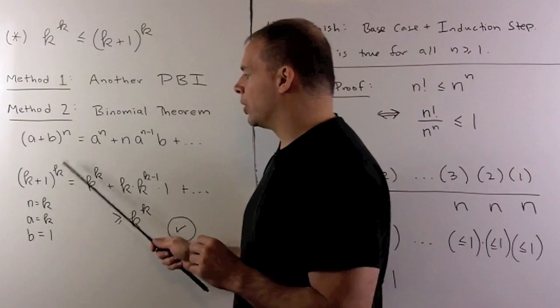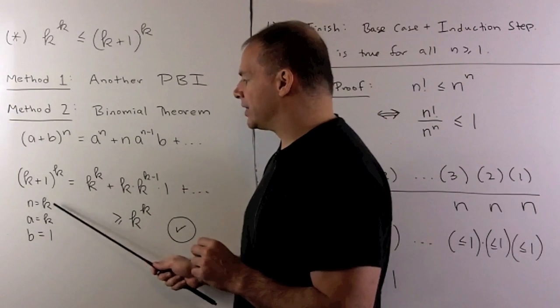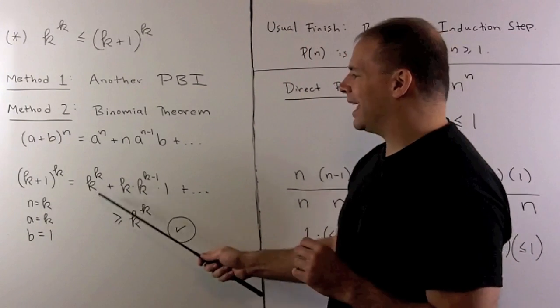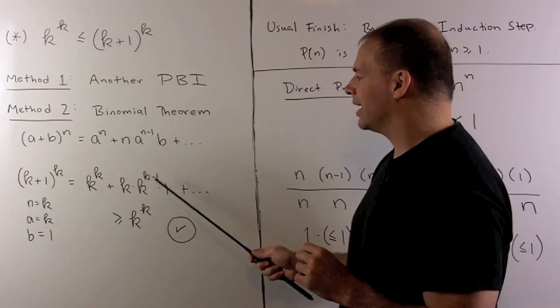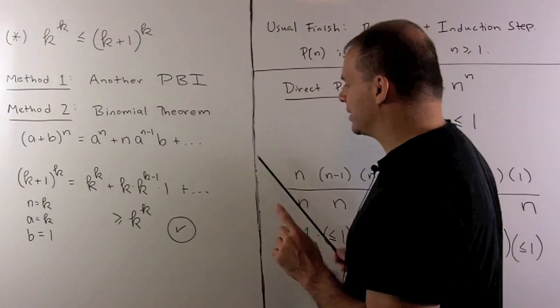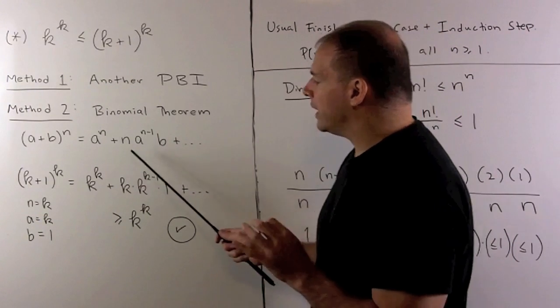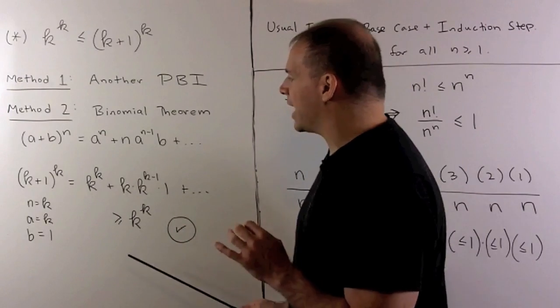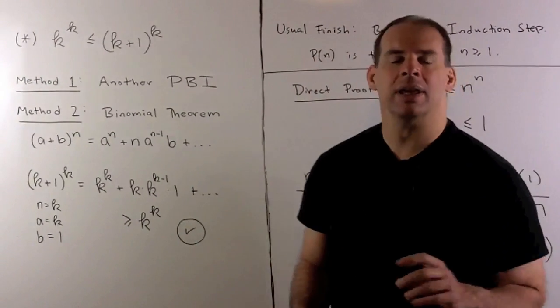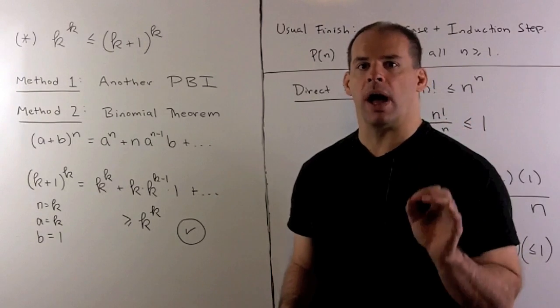Now, if we use k plus 1 to the k, here our n is k, a is k, b is 1. Our first few terms look like k to the k plus k times k to the k minus 1 times 1, and a sum of positive integers. So all we need here is this first term to be able to say that this is greater than or equal to k to the k. That shows our starred inequality.